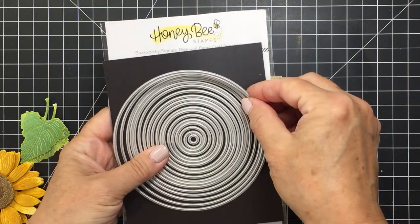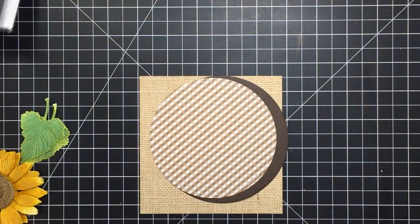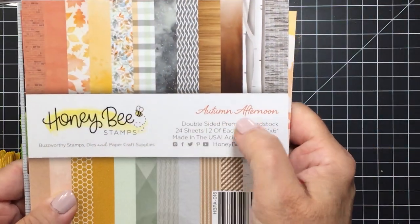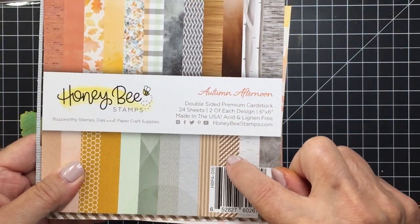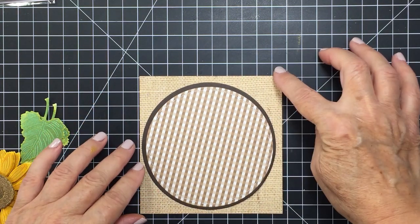Now I'm also going to be using the brand new Sweet Stack Circles. I'm going to be using the two largest circles from that die set. The largest one I cut from some brown cardstock and then I used this plaid from Autumn Afternoon which I absolutely love. It's like a little tiny gingham check. Love it so much.